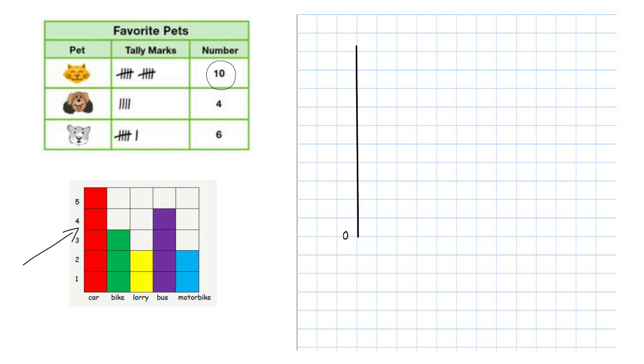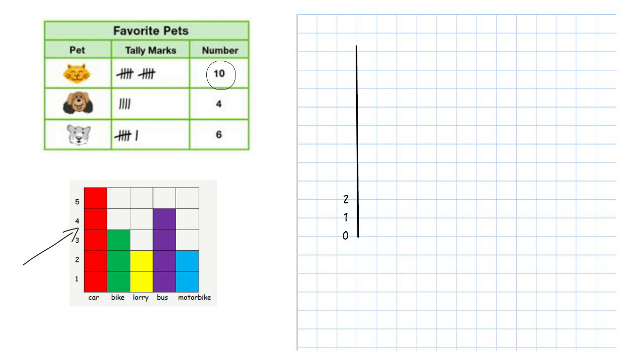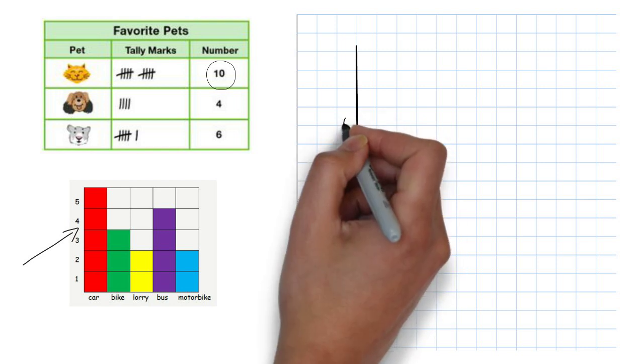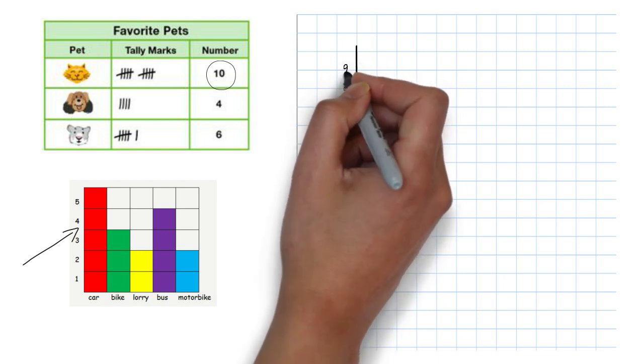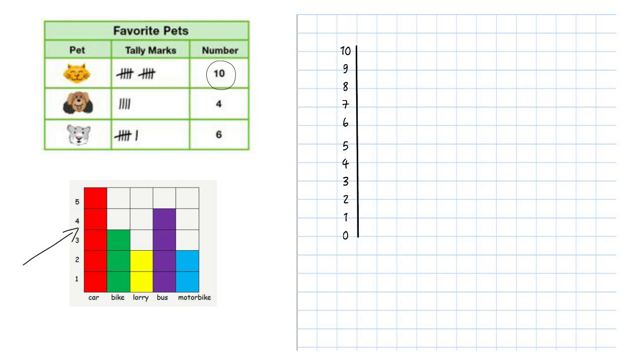Zero, one, two, three, four, five, six, seven, eight, nine, and ten. You can see that I drew on the lines not in the box.